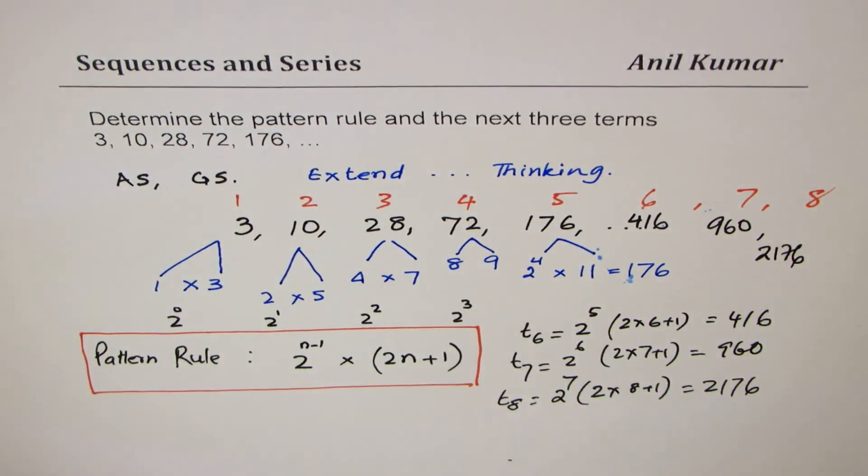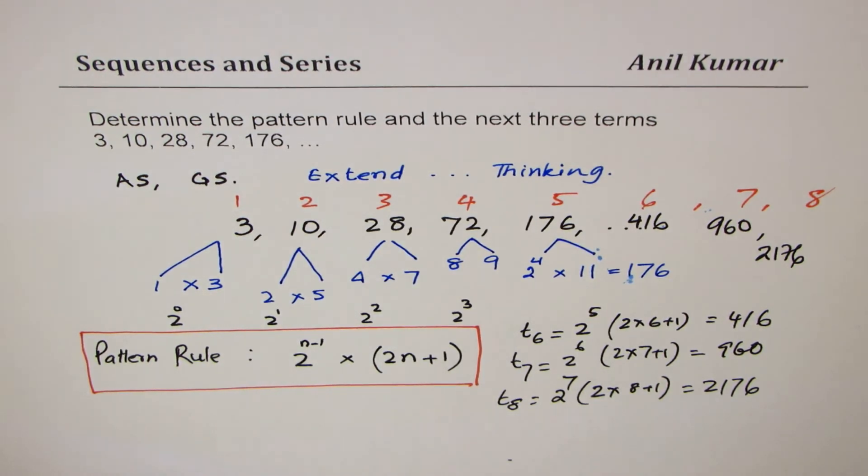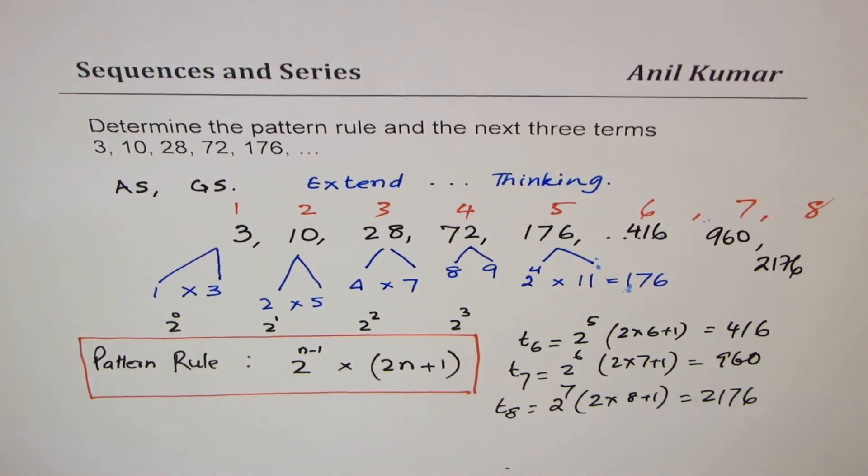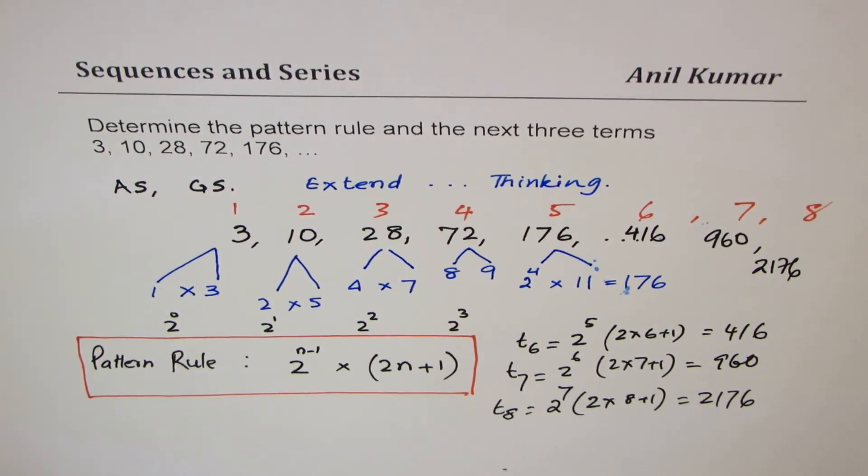So that is how you could actually solve this particular question. So again, let me emphasize that if you do not get a direct relation of finding a pattern rule, you may have to split the numbers and see if there is a pattern that could help you to give you the right answer. I hope that helps. Thanks for watching and feel free to share my videos and subscribe to them. Thank you and all the best.